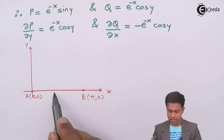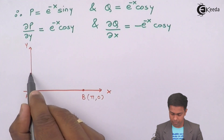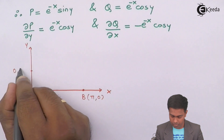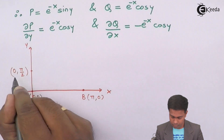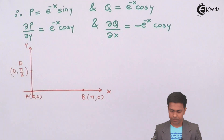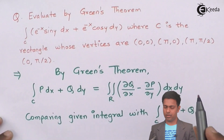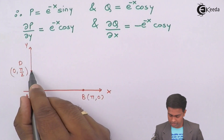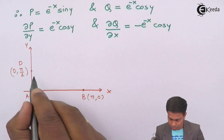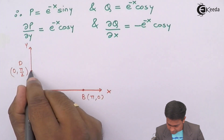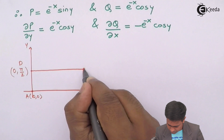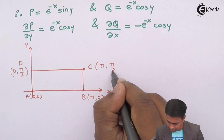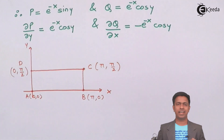Point D is at (0, π/2) and point C is at (π, π/2) — so this coordinate is π and this one is π/2. Drawing this line, we get point C at (π, π/2). So here we have the rectangle with all four vertices plotted.